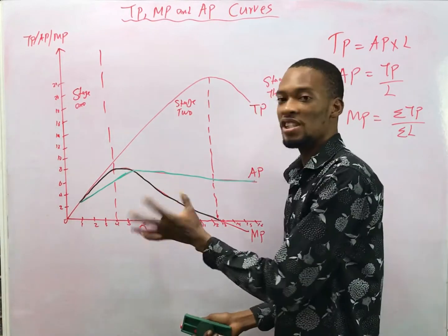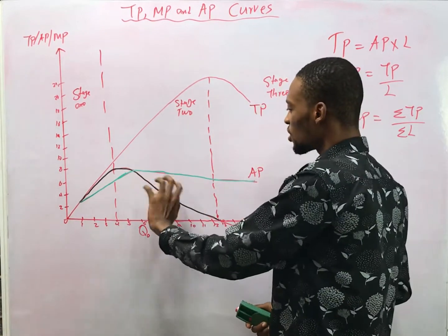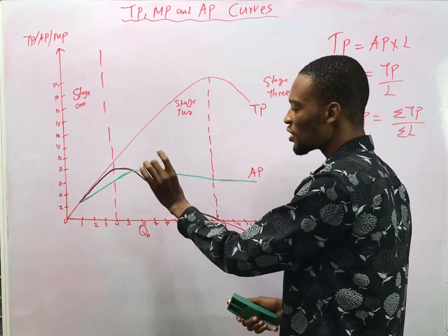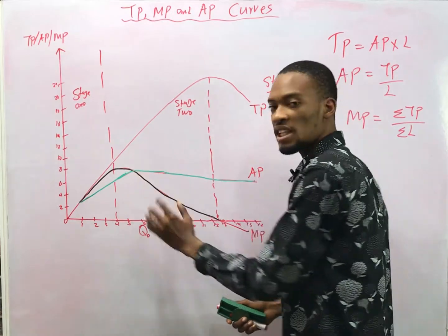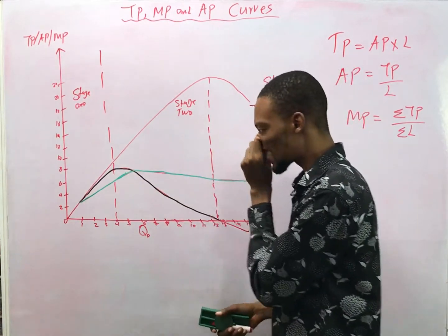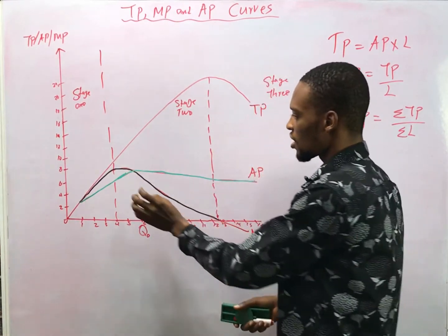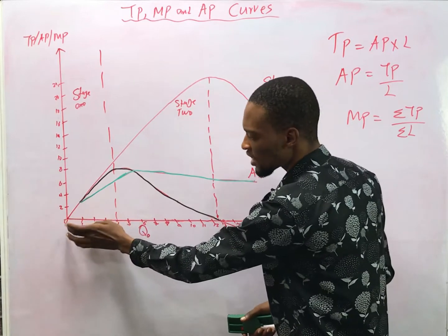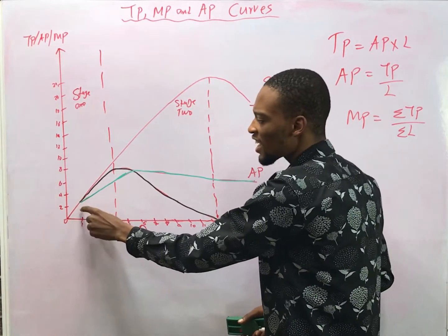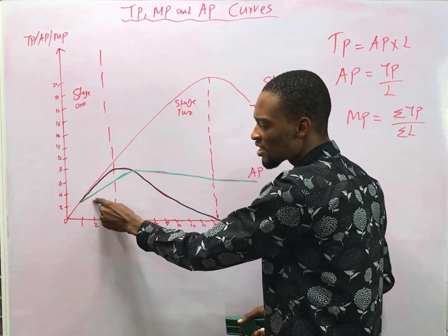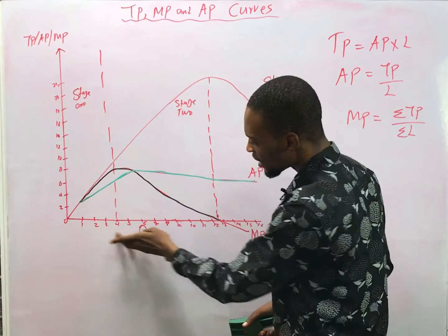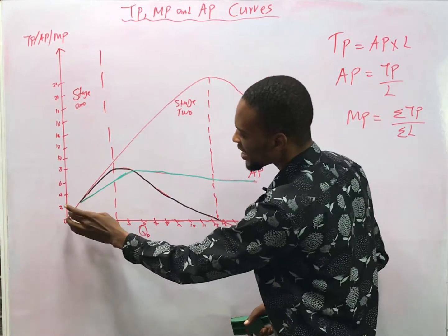I've used different colors to show them so they are better understood. As you can see, average product and marginal product both start from the origin. Average product is increasing — as you move along the input axis, output is increasing.